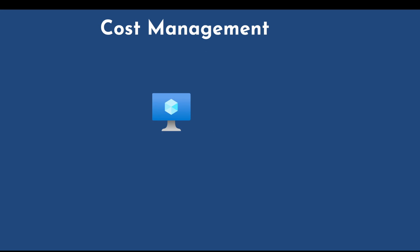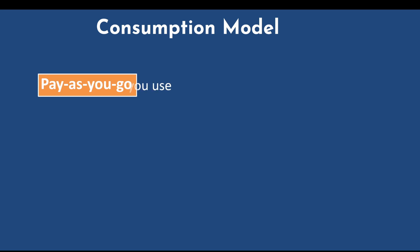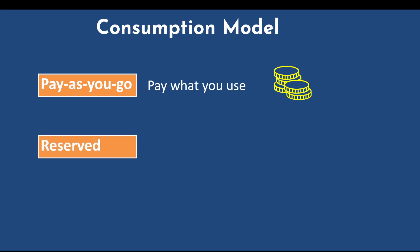Let's take the example of a virtual machine. The cost of a virtual machine depends on its size, licensing, storage, and the region in which the VM is provisioned, among other factors. This type of consumption model is called pay-as-you-go, where you pay for the resources you use during a billing cycle — if you use more compute, you pay more; if you use less, you pay less.